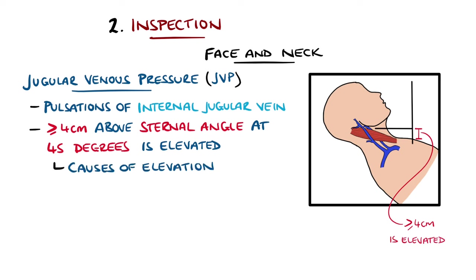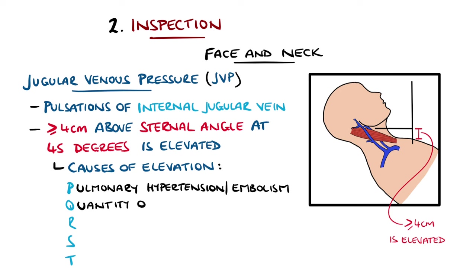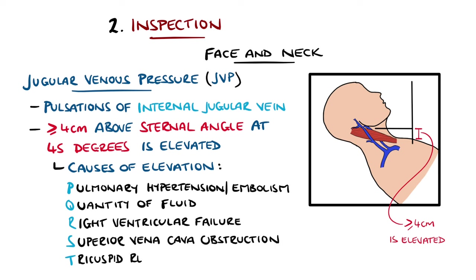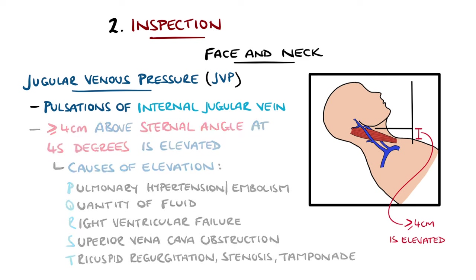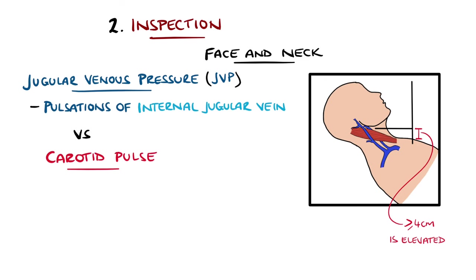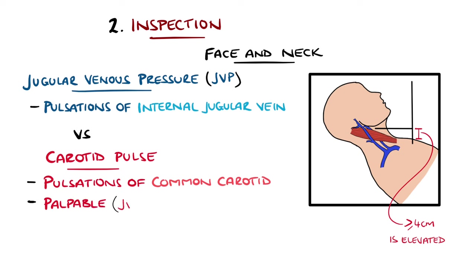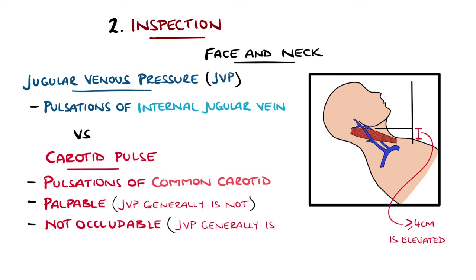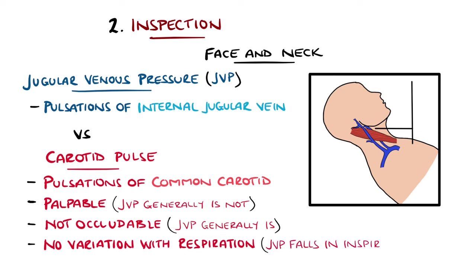Causes of elevated JVP can be remembered with the mnemonic PQRST: pulmonary hypertension and embolism, quantity of fluid to remember fluid overload, right ventricular failure, superior vena cava obstruction, and tricuspid regurgitation, stenosis or cardiac tamponade, including pericardial effusion and constrictive pericarditis. The carotid pulse can be distinguished from the JVP, as the JVP will have pulsations but is not typically palpable and can be occluded by finger pressure. The carotid pulse doesn't vary much with respiration, whereas inspiration causes the JVP to fall, and there is typically a double waveform of the JVP for each arterial pulse.